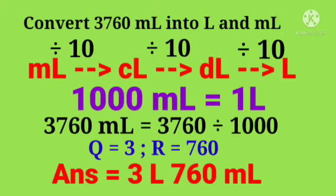We will write the quotient in liter, 760 remainder as mL. So, 3 liter, 760 mL.